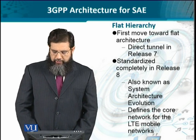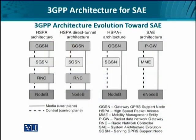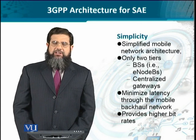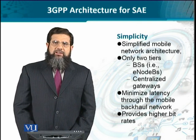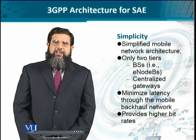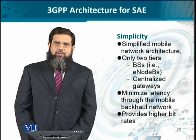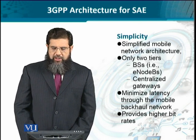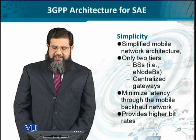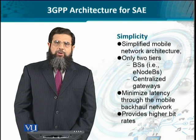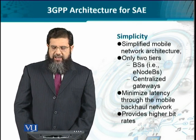The functionality of the system architecture evolution primarily resides in the core of the network. We'll see the evolved packet core that functions in LTE networks today. The building blocks start from the base station or Node B, and the simplified network architecture results in lesser delays. In SAE, we have the E-NodeBs and the gateways performing different functionalities for user and data traffic.